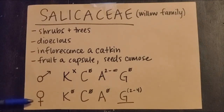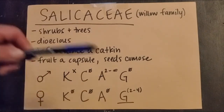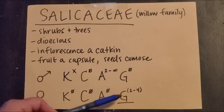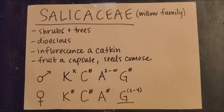For the female flower, there is no calyx, corolla, or stamens. We just have a gynoecium — a syncarpous gynoecium with two to four carpels — and the ovary of that gynoecium is superior.